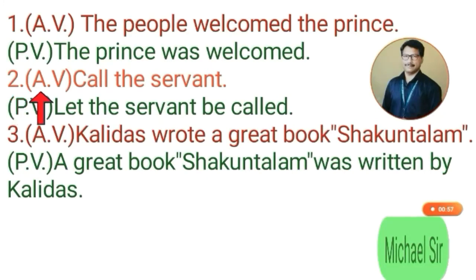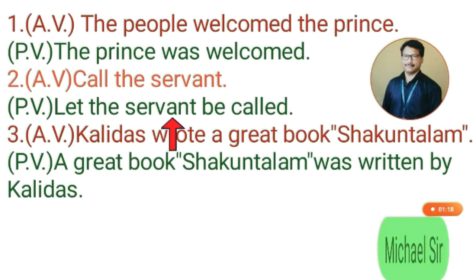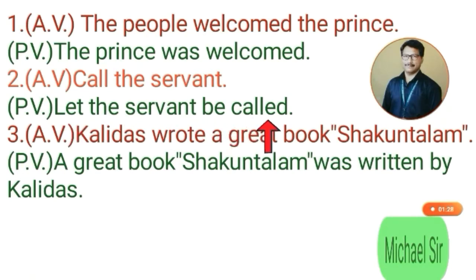Second example. Active voice: 'Call the servant.' This is an imperative sentence, so in passive voice we have to start this sentence with 'let.' Then, soon after 'let,' the object comes as subject: 'Let the servant.' After the object, 'be' should come, then the third form of the verb: 'Let the servant be called.'